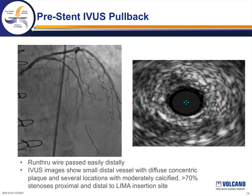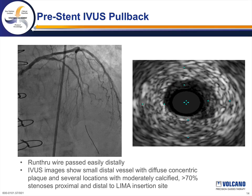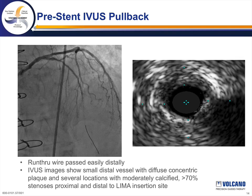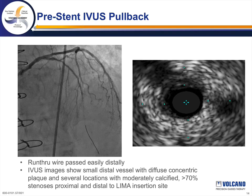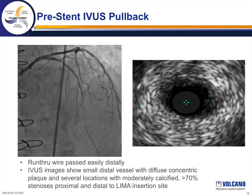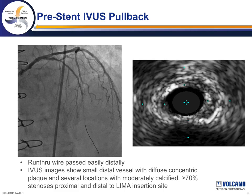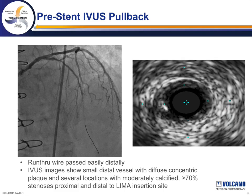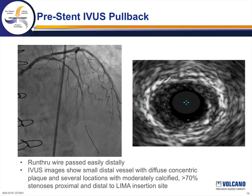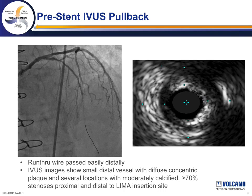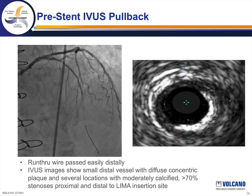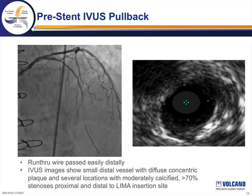Based on the angiograms of the left system, it was unclear whether the LAD was amenable to intervention, and the decision was made to perform intravascular ultrasound of the LAD if possible. A supportive guide was inserted, and interestingly a run-through wire passed very easily into the distal LAD. Intravascular ultrasound images were then obtained. The distal LAD appeared to be larger caliber than suspected, and the IVUS images showed three areas of severe stenosis greater than 70%, one distal to the mammary insertion site and two more proximally, with mixed fibrous and calcified plaque throughout the LAD.